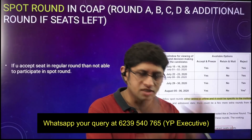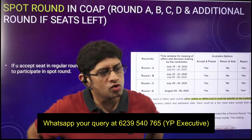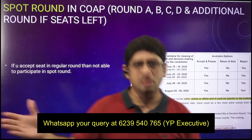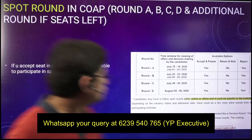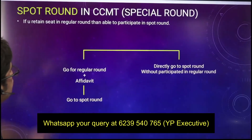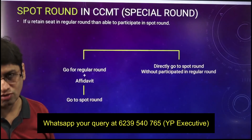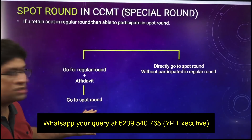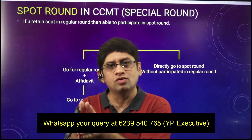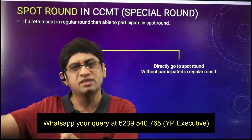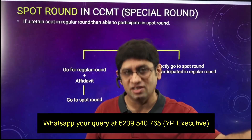Should we take it or reject it and go forward? There is a risk involved. Let me give you one thumb rule here. If you are moving parallel in COAP and CCMT, the spot round is different in CCMT from COAP. In CCMT, the spot round which you avail — you can go for spot round even if you retain something in earlier rounds. So in COAP, if you have taken something till the fifth round, you cannot go to special rounds A, B, C, D — which are basically spot rounds.